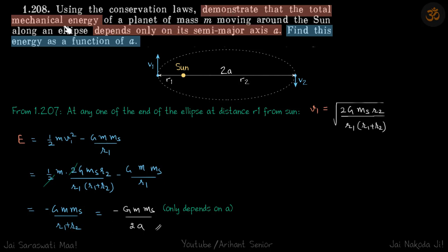We need to demonstrate that the total mechanical energy of a planet which is revolving around the sun in an elliptical orbit depends only on semi-major axis a, and we need to find that energy.